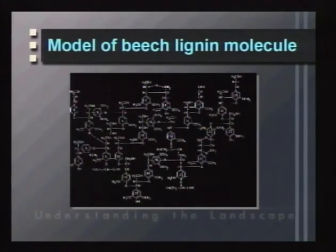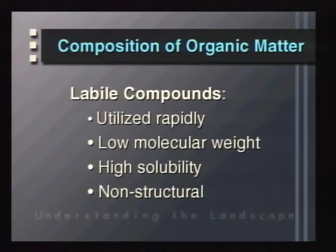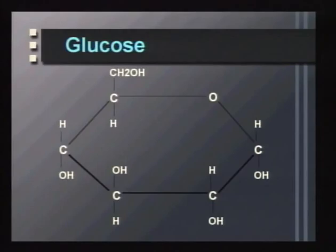The other term we use besides refractory is labile. Labile compounds are utilized very, very rapidly. They tend to be low molecular weight, have very high solubility, and generally represent non-structural compounds that come from the protoplasm or cytoplasm within the cell and leak out. They tend to be much more readily used by organisms. An example would be the simple glucose molecule — the simplest sugar — which is very easy to break down and obtain energy from, making it a very labile organic compound.